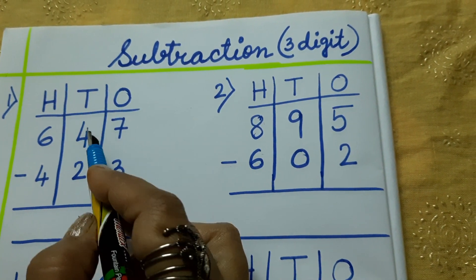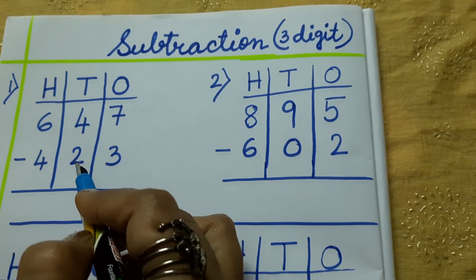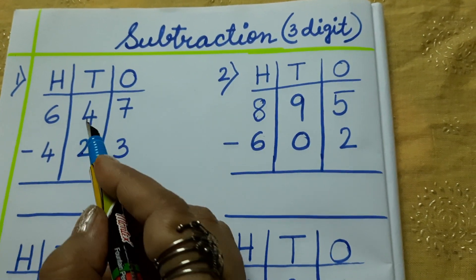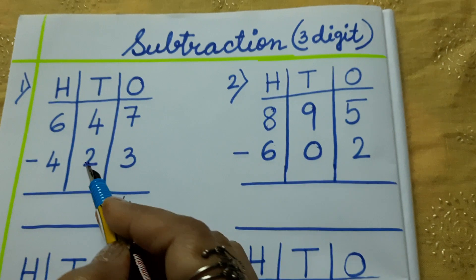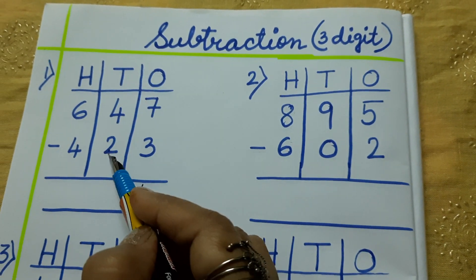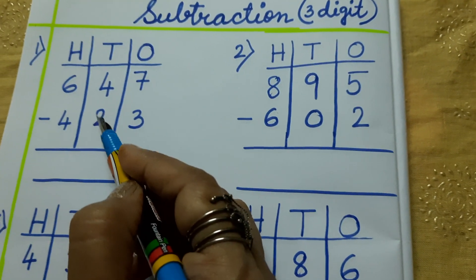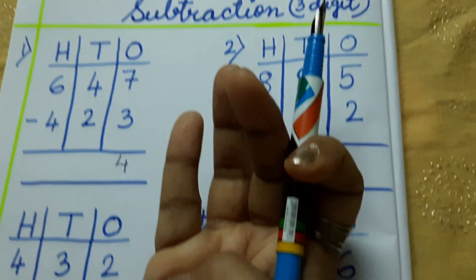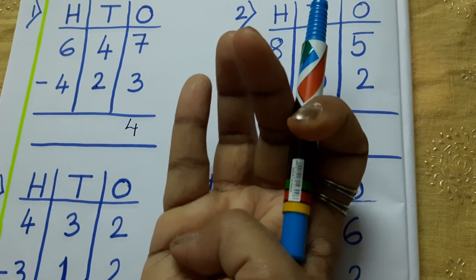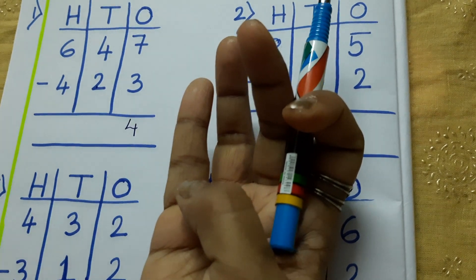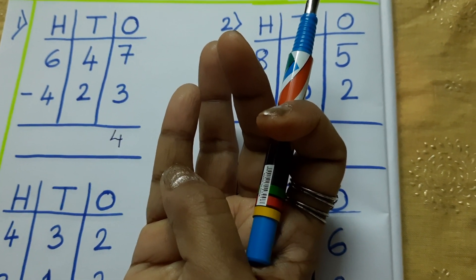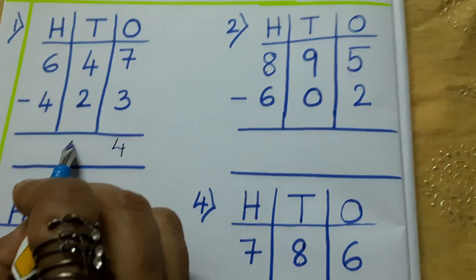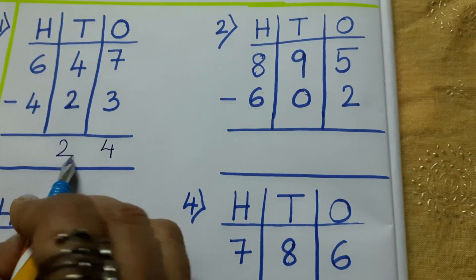Then in 10s room you see 4 minus 2. So, 4 is bigger or 2 is bigger? 4 is bigger and 2 is smaller. So, small one I will keep here. After 2, I have to go up to 4. 3, 4. How many lines? 2. So, 4 minus 2? 2.